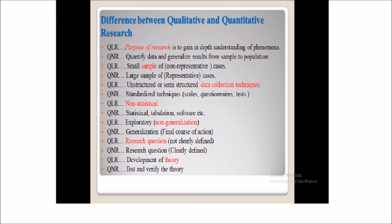The fourth difference is the use of statistical methods. In qualitative research, statistical methods are not used. But in quantitative research, we use statistical techniques like correlation, T-test, ANOVA, MANOVA, and SPSS — Statistical Package for Social Sciences. In qualitative research, these packages and softwares are not used.